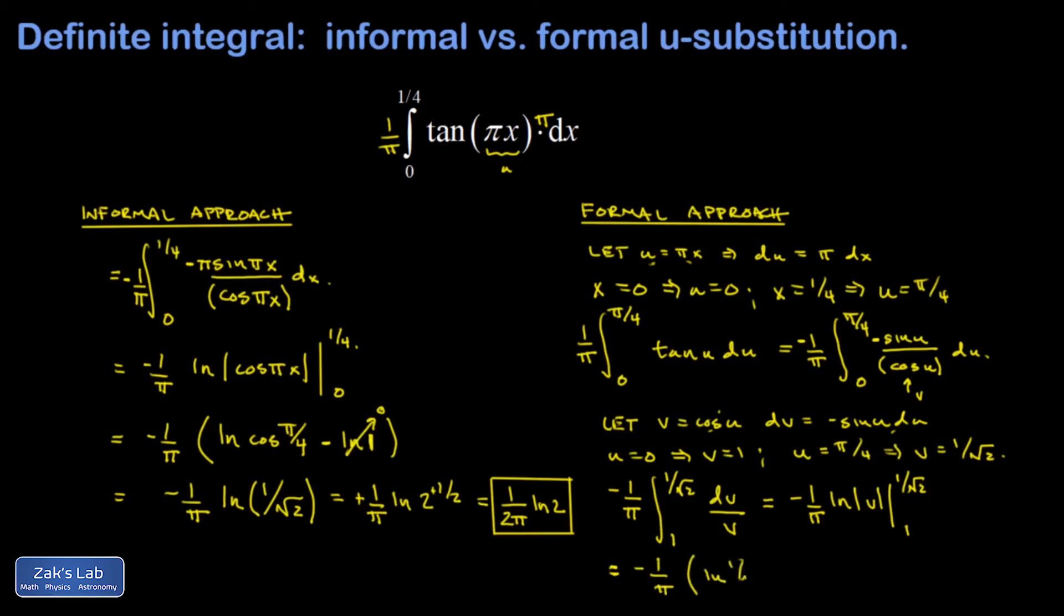Natural log one over root two minus natural log one, which vanishes. And again, one over root two is two to the negative one half, and I pull the power out in front, and I end up with one over two pi natural log two.